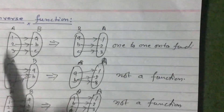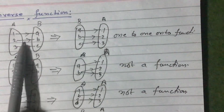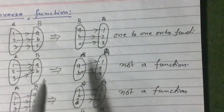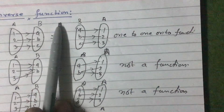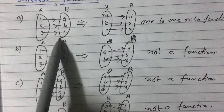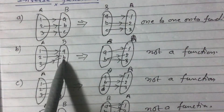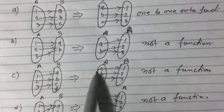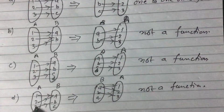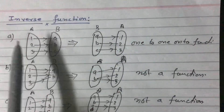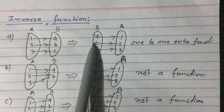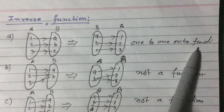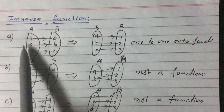So only in the case of the one-to-one onto function, if we interchange the domain and co-domain, it will again become a function. In the case of many-to-one onto, one-to-one into, and many-to-one into functions, it is not a function after interchange. So inverse exists only in a one-to-one onto function.